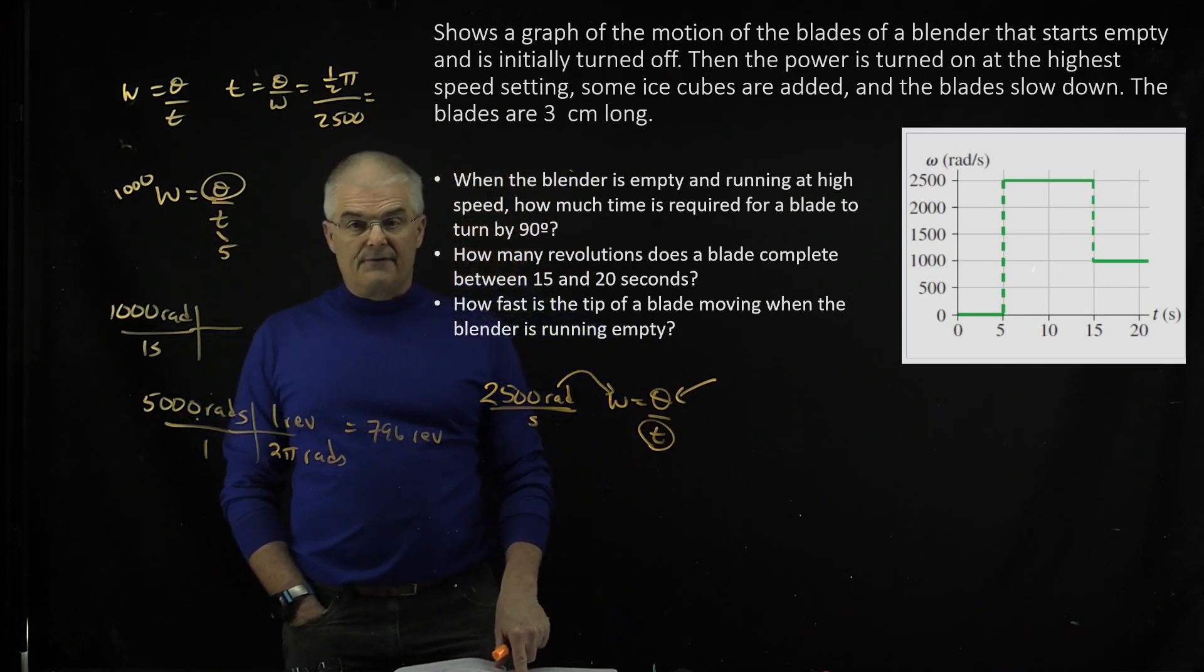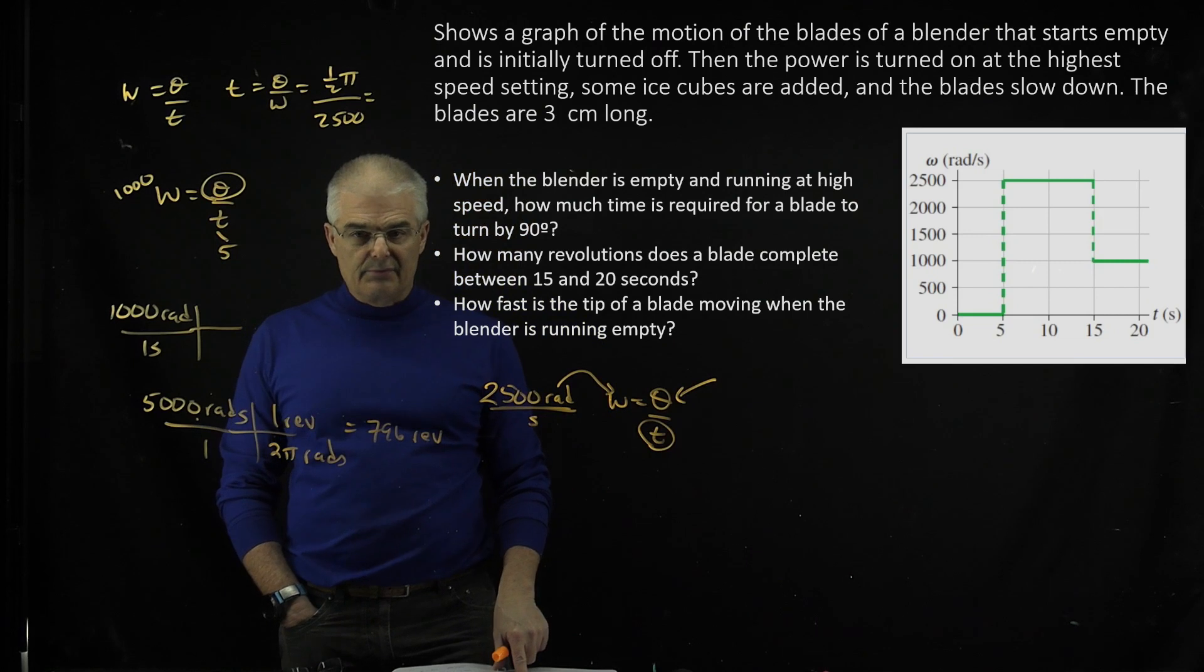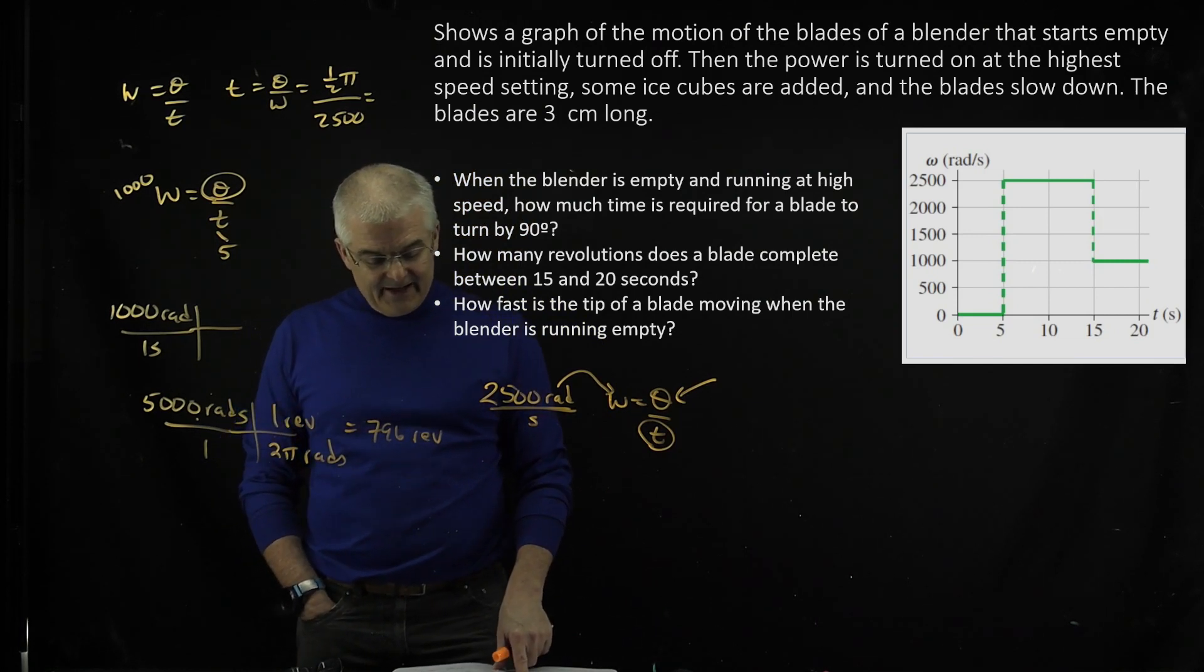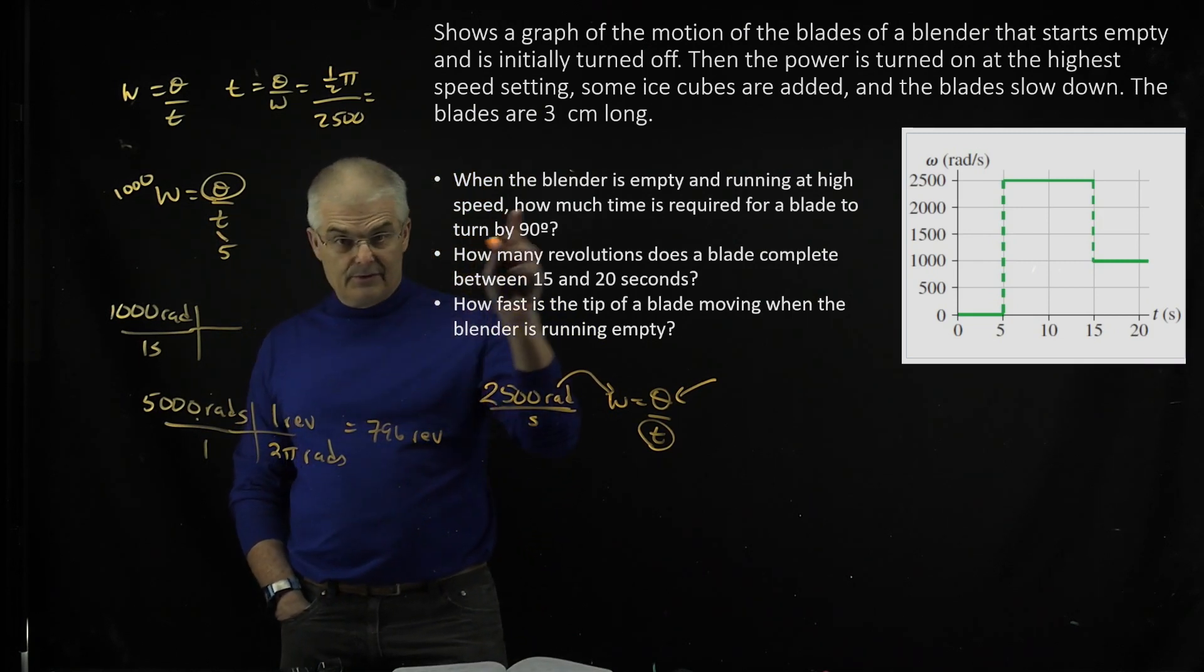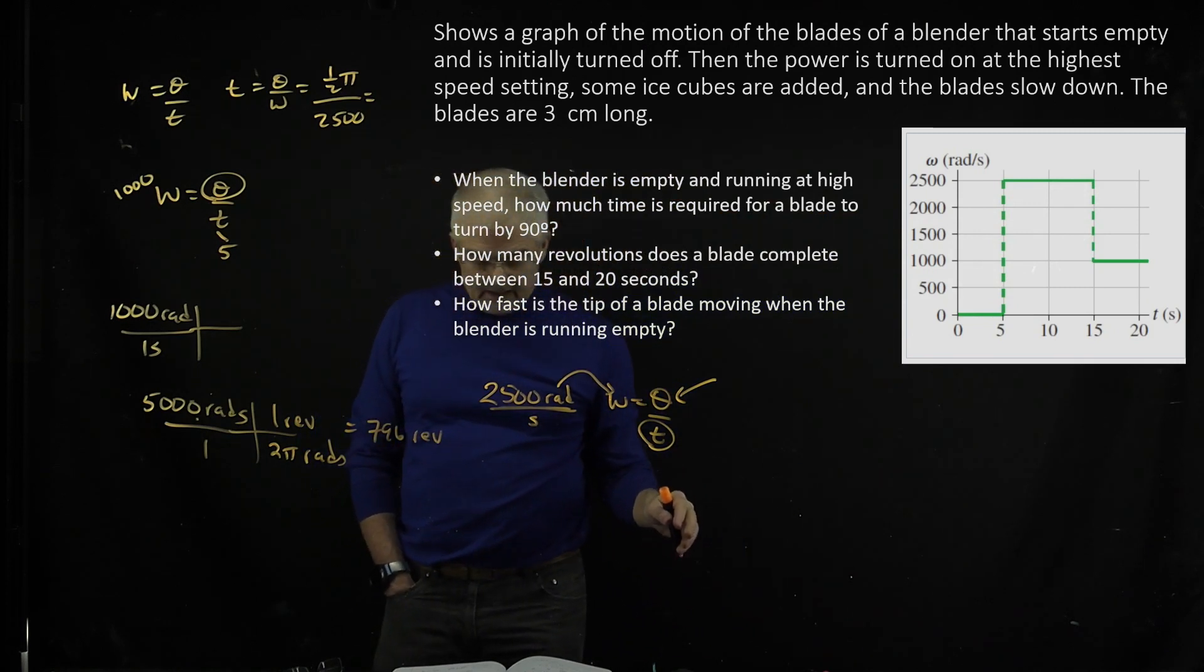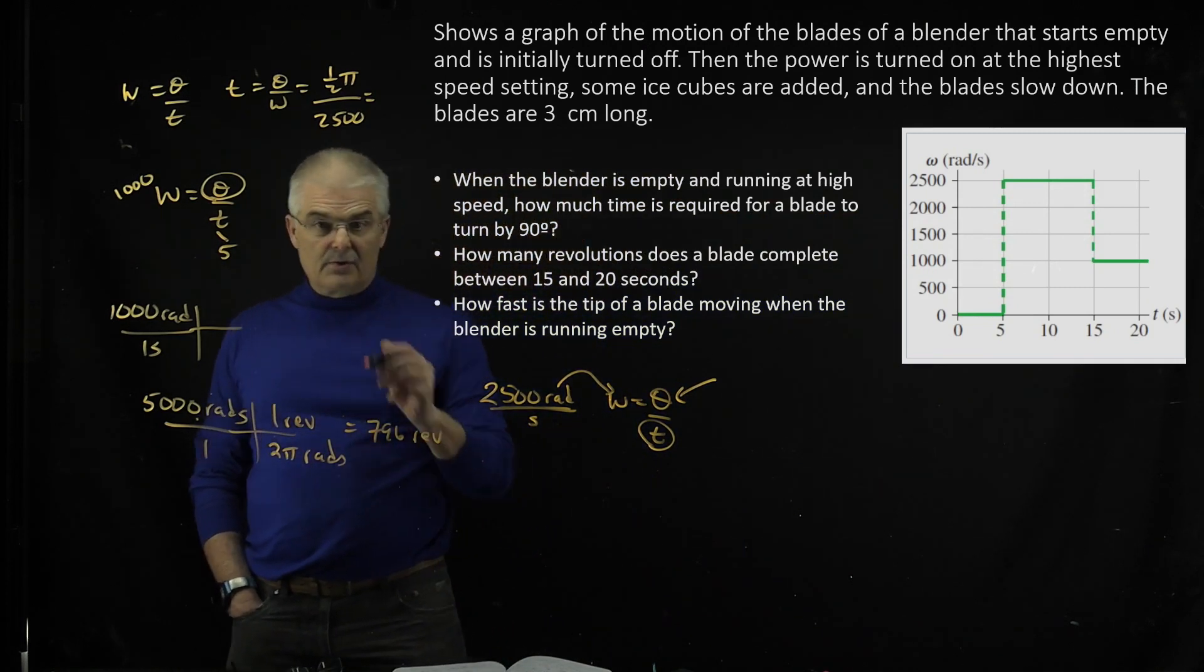And then the last question says, how fast is the tip of the blade moving when the blender is running on empty? It's going to be moving at 2,500. Look at the graph. When it's empty, it's moving at 2,500 rad/s. So watch how I do this.